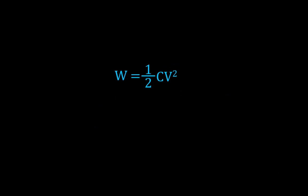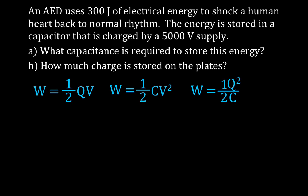So we have one more problem we're going to do. This one involves an AED, automatic electric defibrillator, I think it's what it's called. So we have a defibrillator that uses 300 joules of electrical energy to shock the human heart back to normal rhythm. That's what an AED does. It simply provides electric shock to the heart, trying to get it back to its normal rhythm, normal heartbeat. And the energy is stored in a capacitor or a series of capacitors that are in parallel with each other. And that capacitor is charged by a 5,000 volt source. We want to know what is the capacitance that we need to store 300 joules of energy when we have 5,000 volts. And we want to know how much charge is stored.